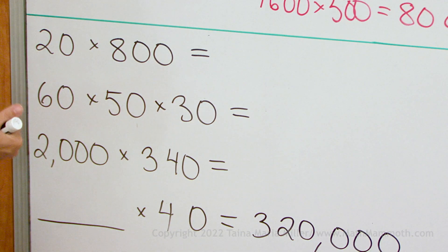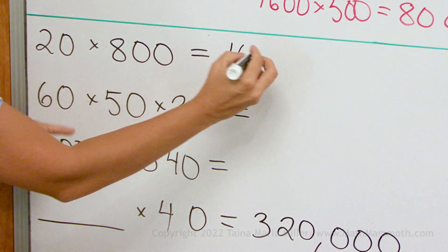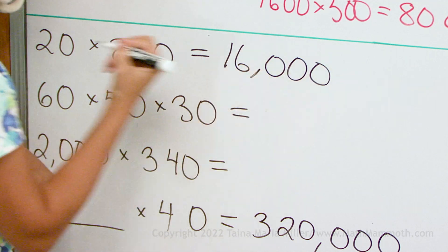Go 2 times 8 equals 16, and then gather your zeros. One, two, three. Like that.